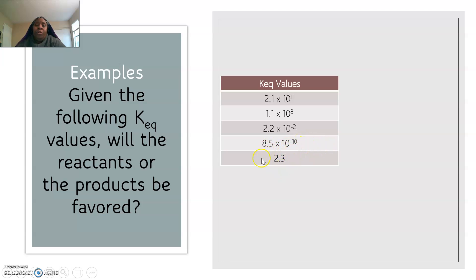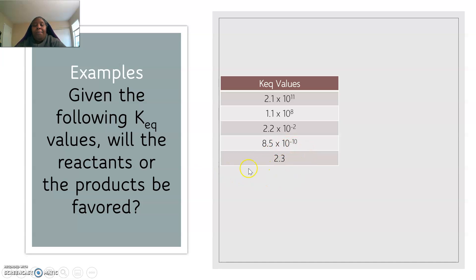For example four, the equilibrium constant is 8.5 times 10 to the minus 10 — even smaller than the previous number — so it's definitely going to favor the reactants. For the last one, we have a number around 2.3. It's not overly huge, not really small. If you're strict about greater than 1, you'd say it favors the products. But as a chemist, I'd say it probably doesn't favor either side — though either answer would be accepted.